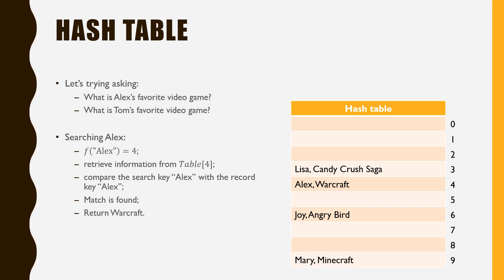Let's try two searches here — we would like to know Alex's and Tom's favorite games. When searching for Alex's record, we first compute its corresponding hash value, which is 4 here. We then retrieve the information from the fourth position of the hash table. We compare the search key, Alex, with the record key, Alex, and find the match. We then return the value field of the record — in this case, Warcraft — as the result for the search.